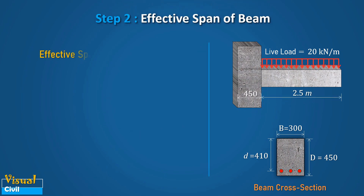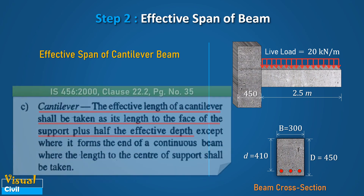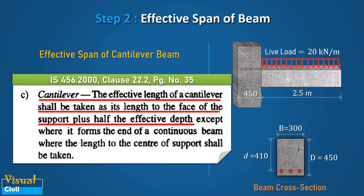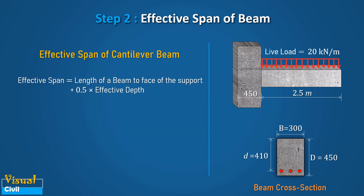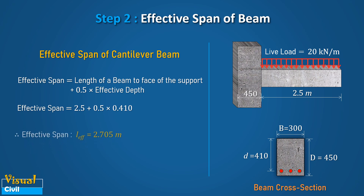In step 2, let us calculate the effective span of the beam. As per clause 22.2 of IS 456, the effective span of a cantilever beam is equal to the length of the beam to the face of the support plus half the effective depth. After putting in all the values, we get the effective span equal to 2.705 meters.